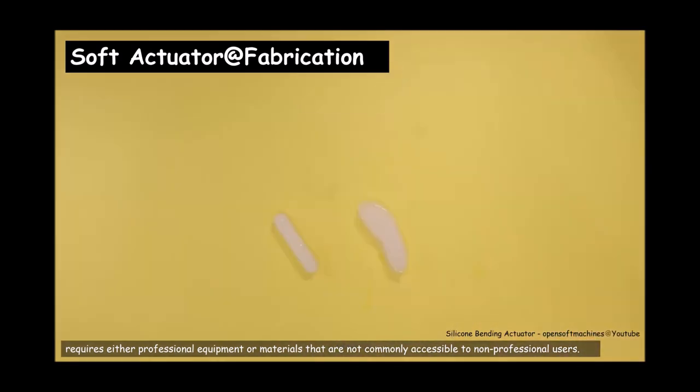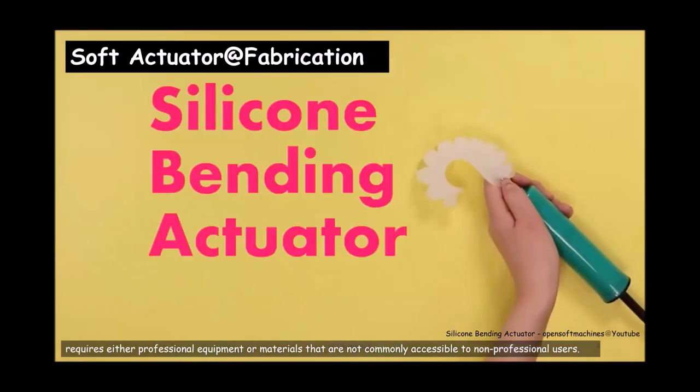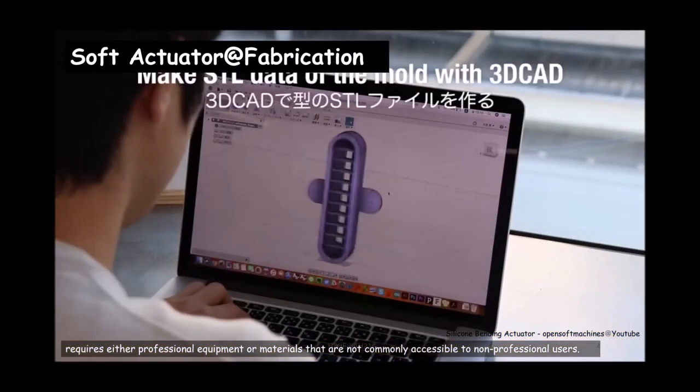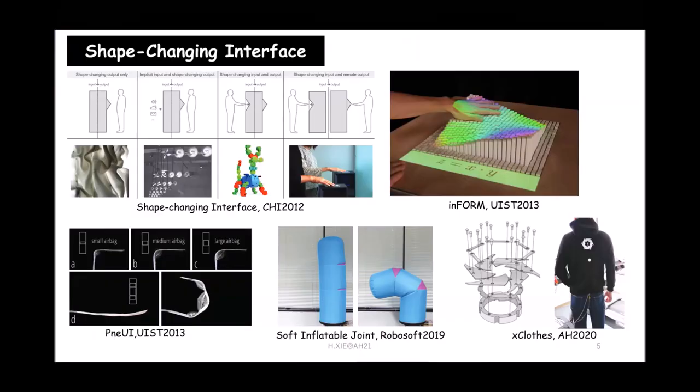We need to glue it together, we need to even wait for four hours. Then we can get a bending actuator like this. This is what happens for the normal one. So basically my research belongs to the topics in human-computer interaction called the shape-changing interface.